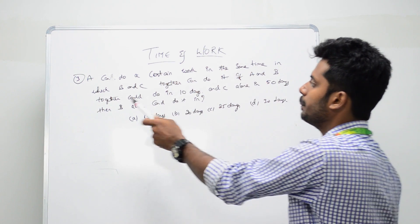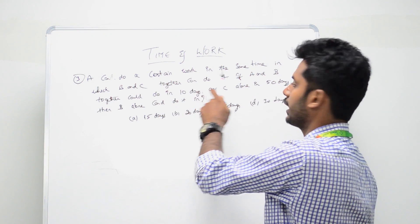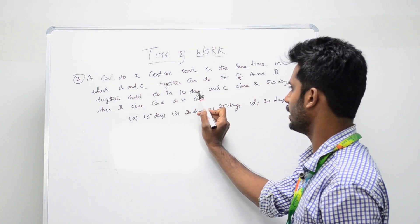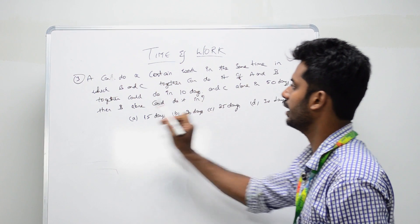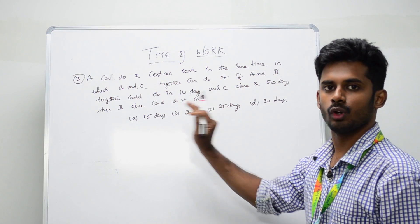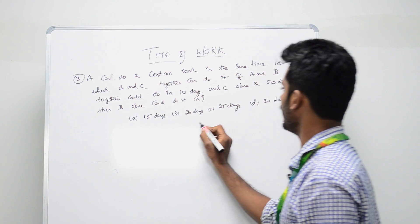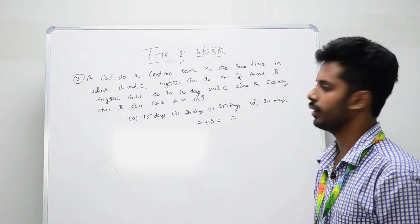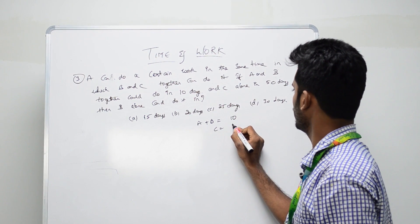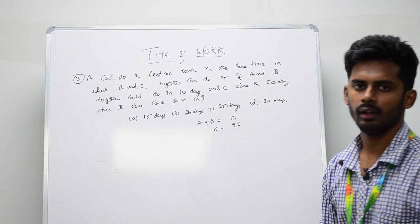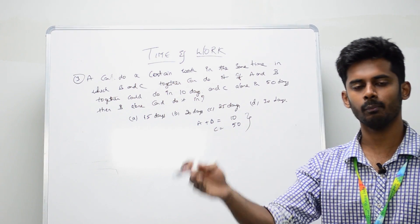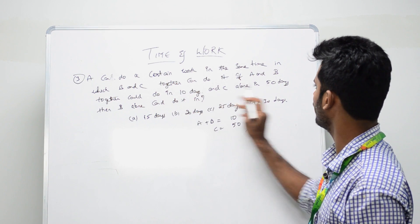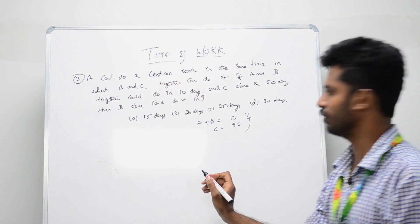They also say A and B together can do it in 10 days, and C alone can do it in 50 days. We need to find how many days B alone takes. Leave the A equals B plus C condition aside for now. Whenever you see this kind of question, take the LCM of 10 and 50. The LCM is 50.